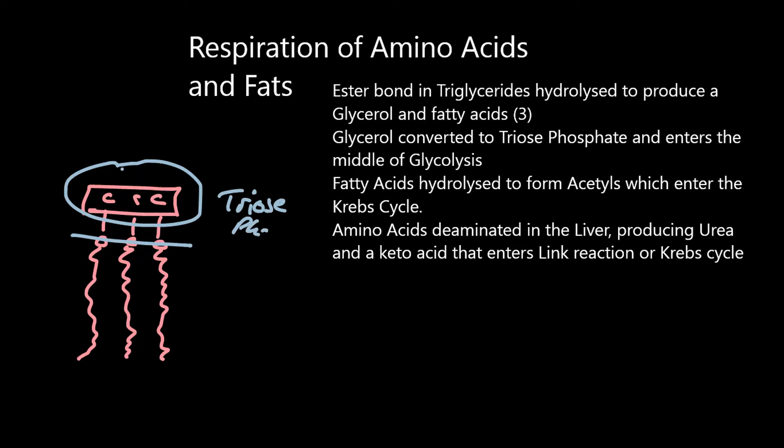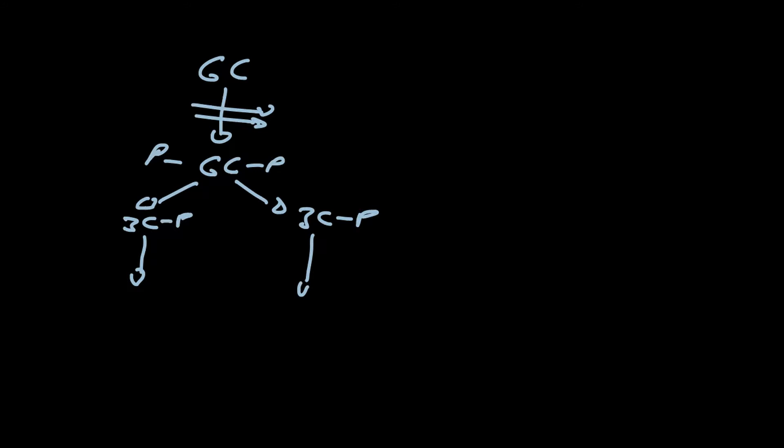Now that triose phosphate is able to enter the middle of glycolysis, because remember in glycolysis we had glucose being phosphorylated twice to give you a hexose biphosphate, and that hexose biphosphate then splitting to give you two three carbon triose phosphates. Those triose phosphates are then used to produce pyruvate with the production of two ATPs through substrate level phosphorylation, and additionally the production of two reduced NADs.